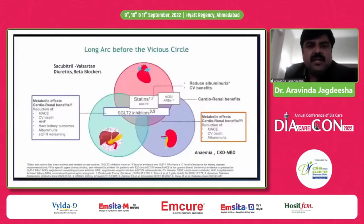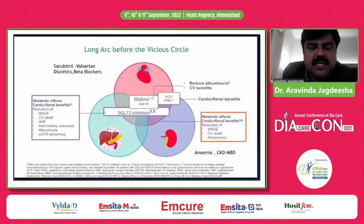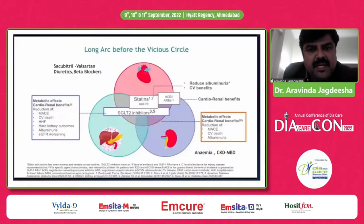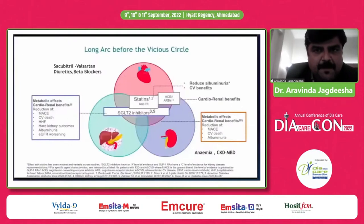The take-home message is: diabetes, CKD, and heart failure are interlinked in a vicious cycle. Identifying and treating aggressively from the beginning will enable prevention of cardiovascular and renal morbidity and mortality in the long run. Thank you for your patience in hearing me.